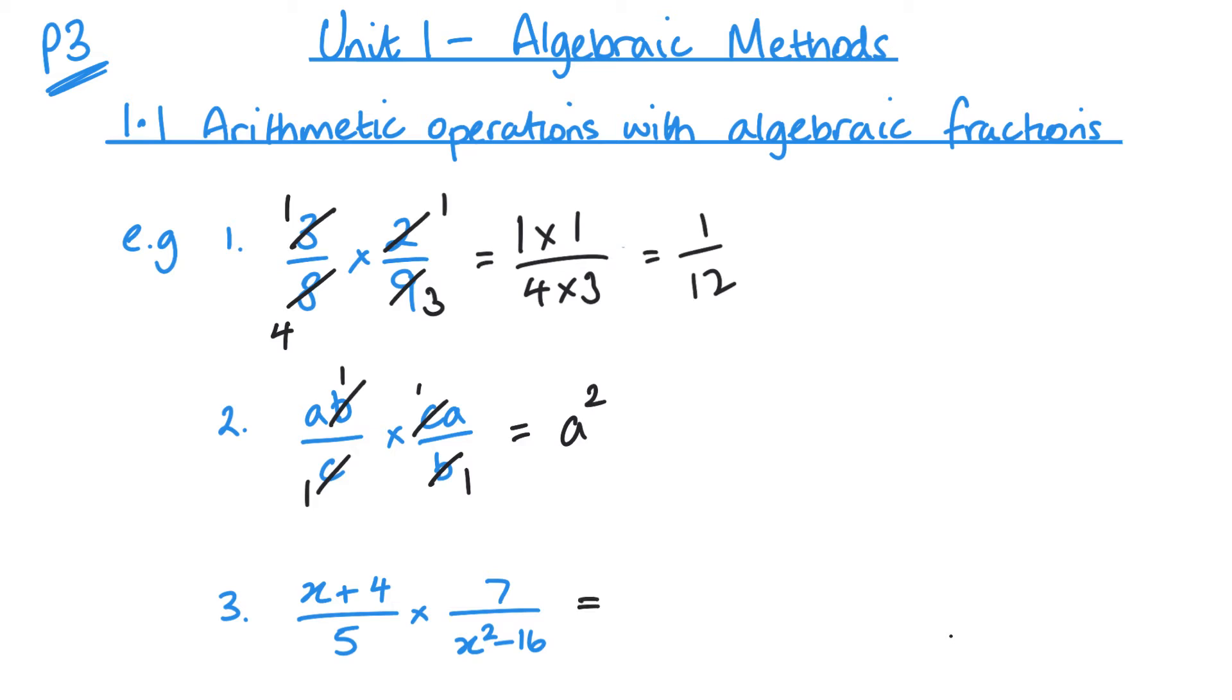Now with this third one before we can actually simplify it we need to recognize that this bottom here is the difference of two squares which means I can factorize it. I can put it into brackets. So we've got x plus 4 over 5 multiplied by 7 over and it's an x plus 4, x minus 4. And then I can cancel this x plus 4 with this x plus 4. And that leaves me then on the top 1 multiplied by 7 and then on the bottom 5 multiplied by x minus 4. And I'd leave that factorized. I leave that in the brackets.